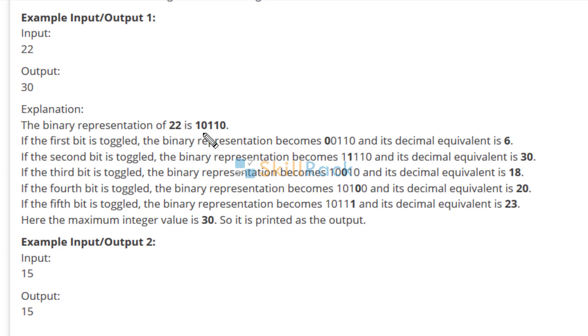The binary representation of 22 is 10110. To get maximum we have to toggle the most significant bit. So this must become 11110. This binary representation gives 30. So the program must print 30 as the output.